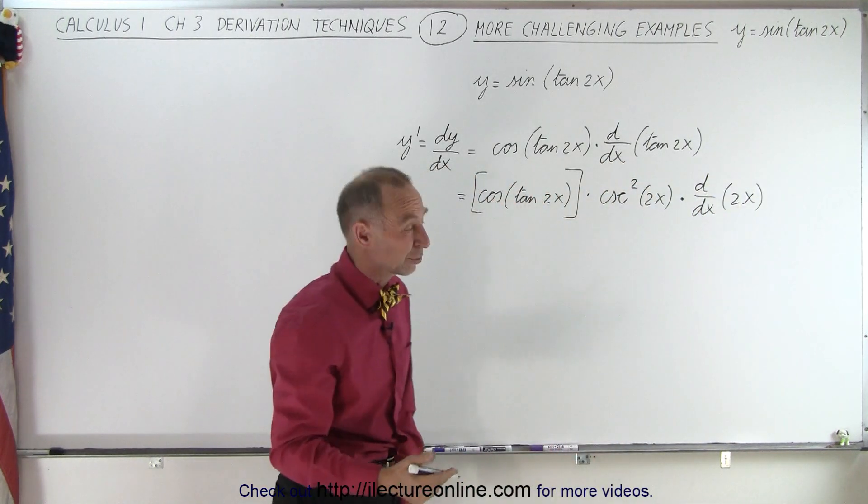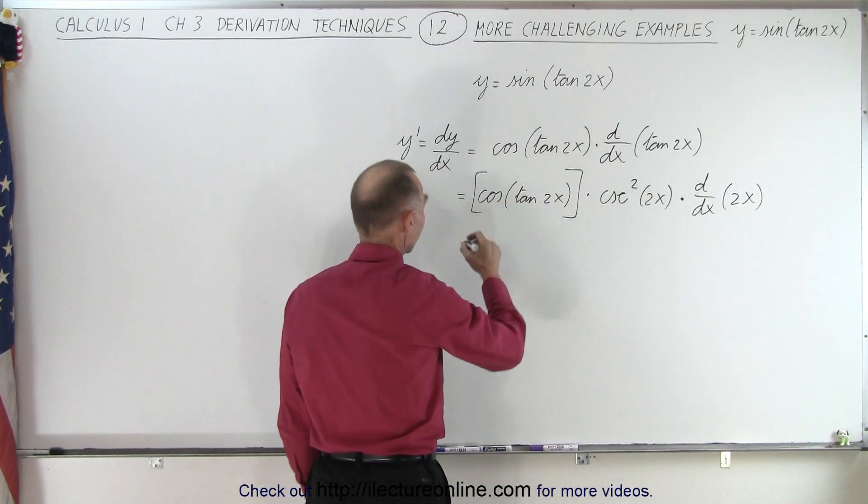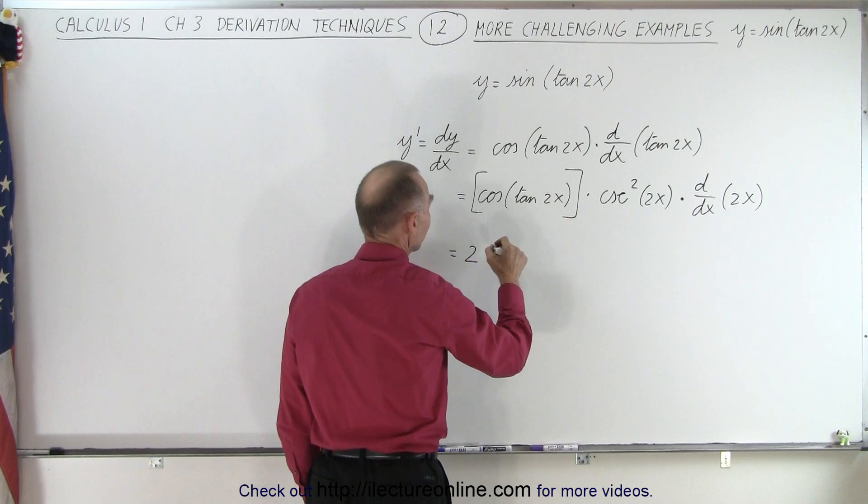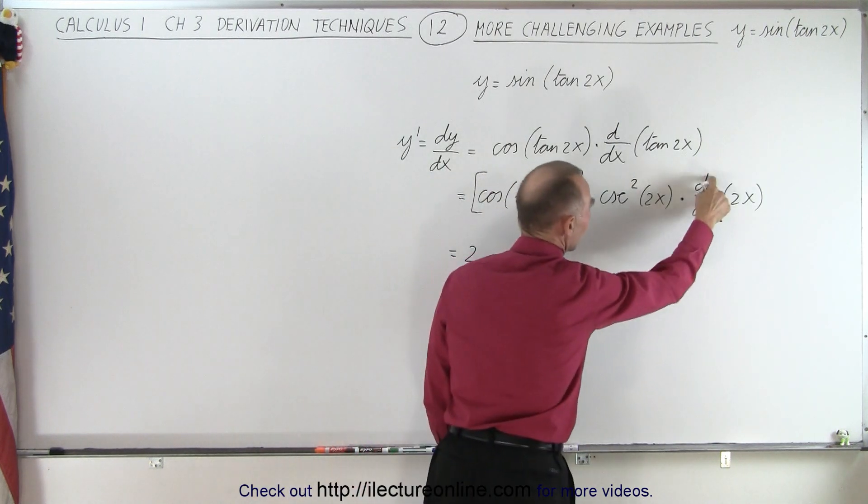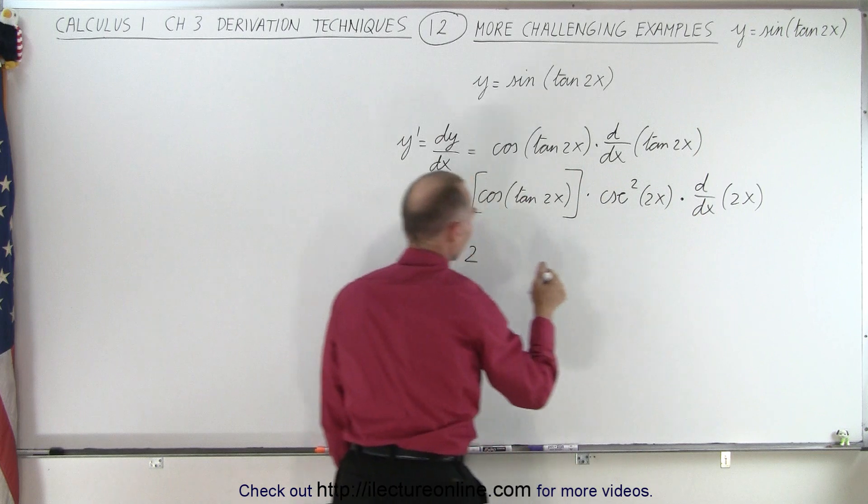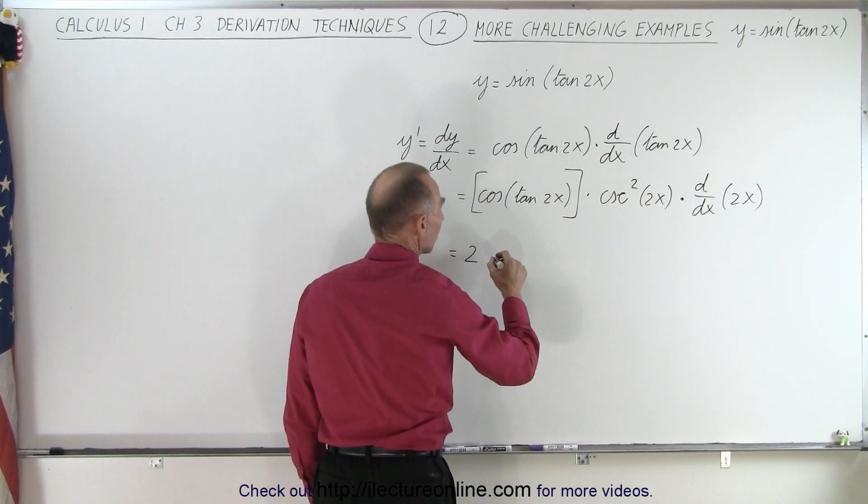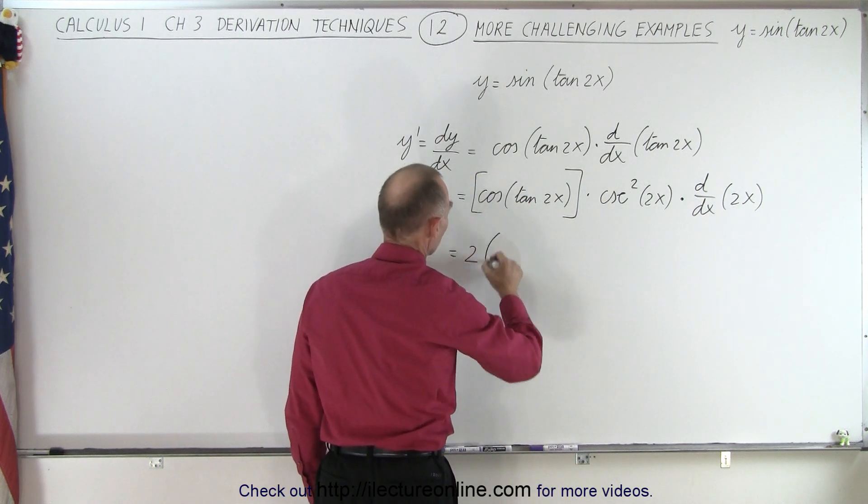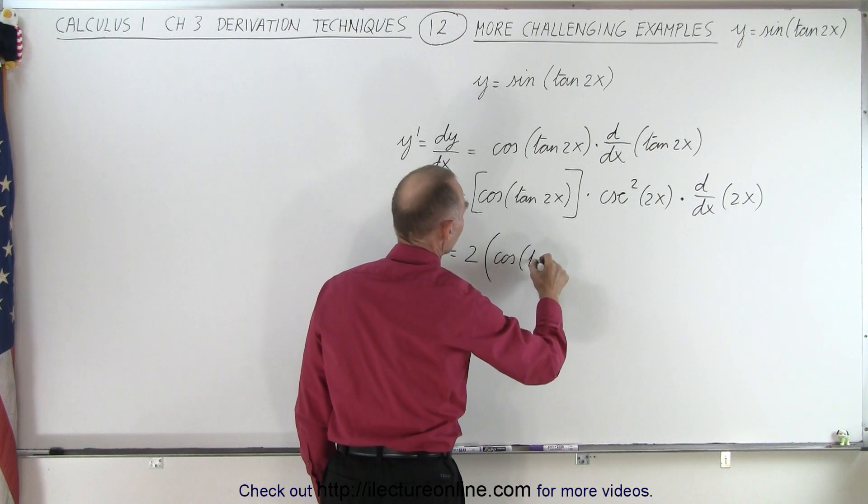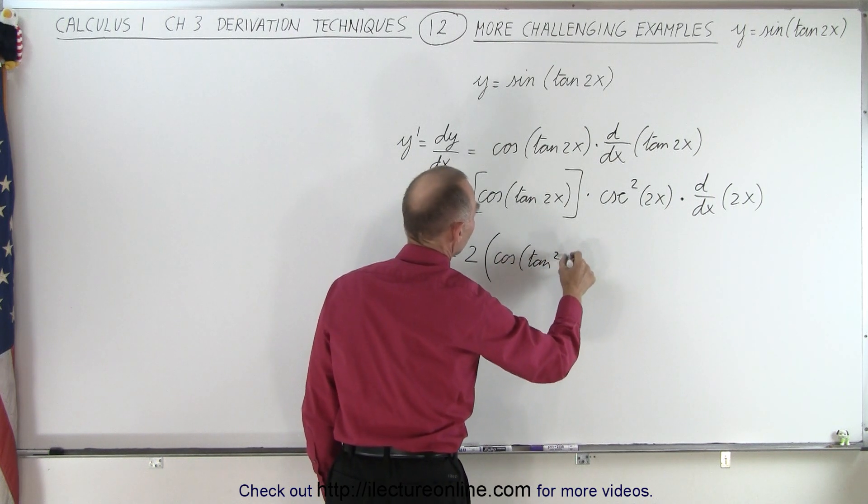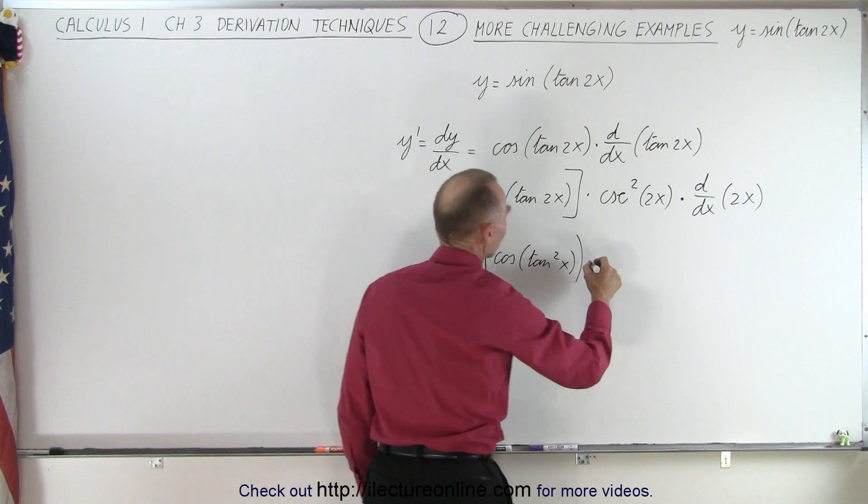And of course the d dx of 2x is equal to 2, which then comes in the front. So this becomes 2 times, because 2 is the derivative with respect to x of 2x, times the, well, it doesn't matter which order we write it in. So we can write it as a cosine of the tangent of 2x, times the